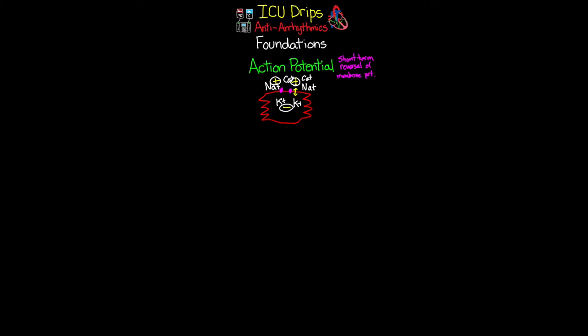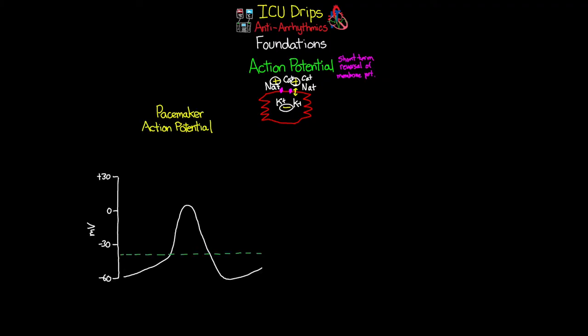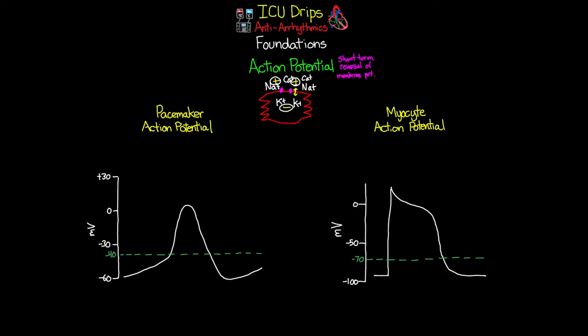There are two different types of action potentials within the heart that we want to discuss: the pacemaker action potential and the myocyte action potential. These look quite different because they function differently and serve different purposes. On the graph, the left-hand scale shows millivolts. Normally the cell has a negative charge, and as the action potential occurs and the cell depolarizes, it moves into positive territory before returning to negative.